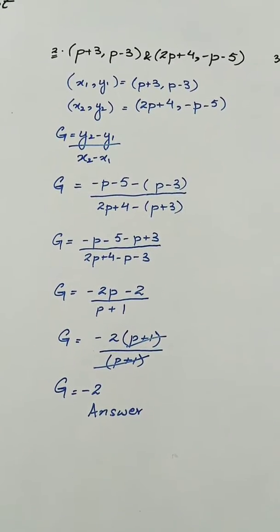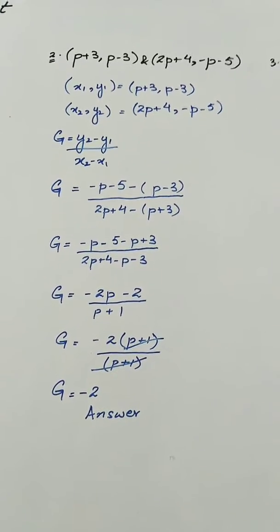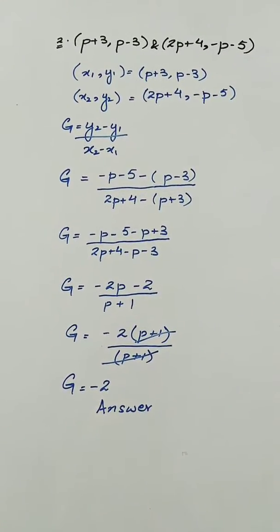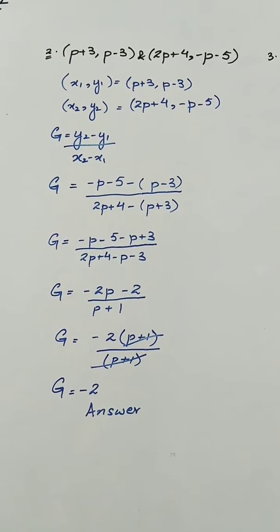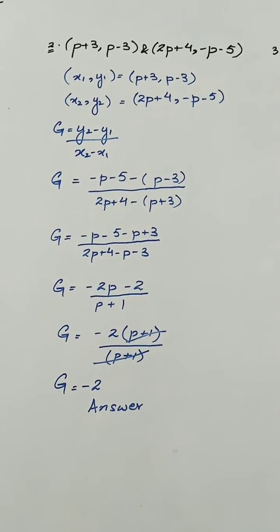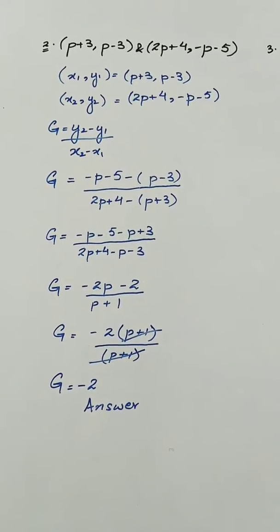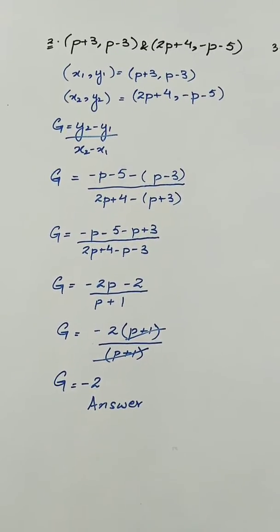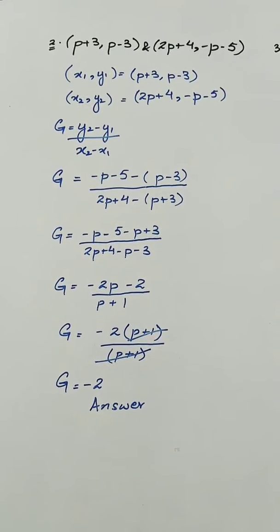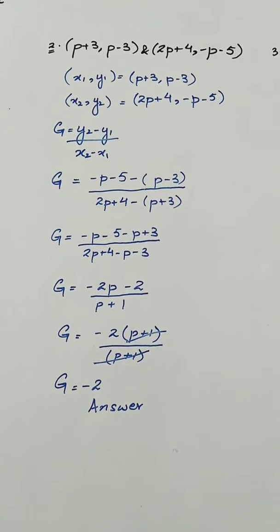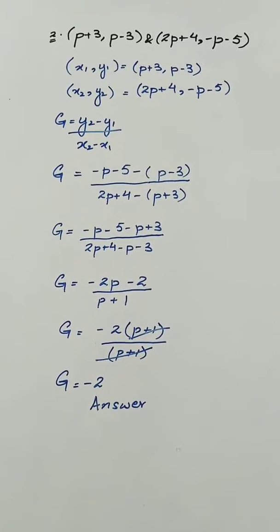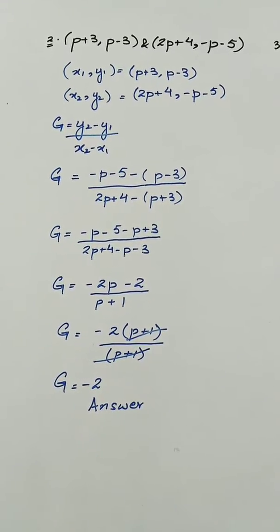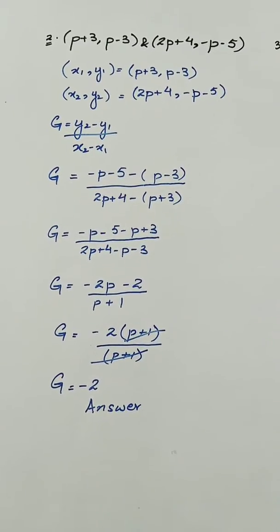We have to take care of the sign here, as the minus sign in the middle of the formula will apply to the whole term of y1 and x1. So here we have -p - 5 - (p - 3) divided by 2p + 4 - (p + 3). Further solving, we will have -2p - 2 over p + 1. Taking -2 as a common in the numerator, we have -2(p + 1) divided by (p + 1), and the (p + 1) in numerator and denominator cancel out, giving the answer as -2.